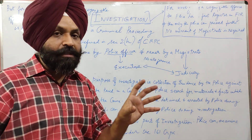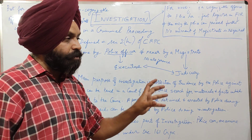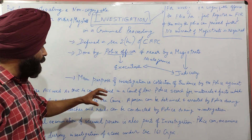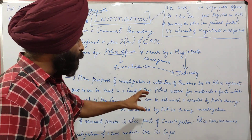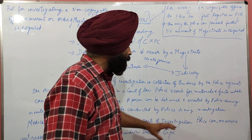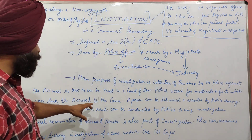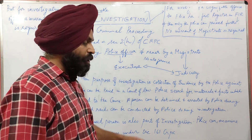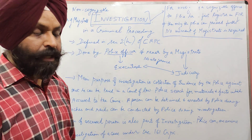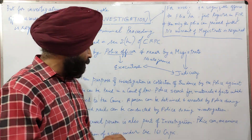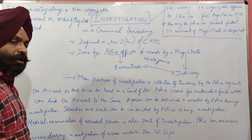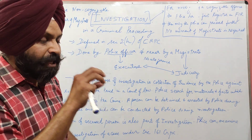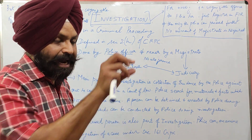What does the police do in investigation? Police collects evidence against the accused so that the accused can be tried in a court of law. Police searches for the material and facts which can link the accused to the crime. During investigation, the police makes searches for materials and facts to establish a link between the accused and the crime.